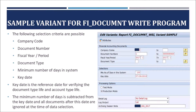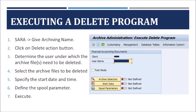Once the write action is triggered, data from the database is read and written to archive files. One archive write job creates one or more archive files based on the size of data in the database. On completion of the write job, we need to trigger the delete jobs. The delete jobs can be customized to run automatically or manually.